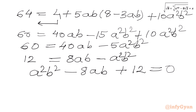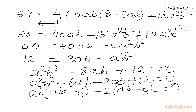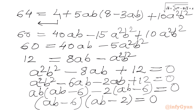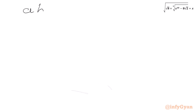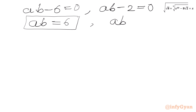This equation is quadratic in AB. Using factorization, we split −8AB as −6AB − 2AB: AB(AB − 6) − 2(AB − 6) = 0, giving (AB − 6)(AB − 2) = 0. By the zero product property, either AB = 6 or AB = 2.